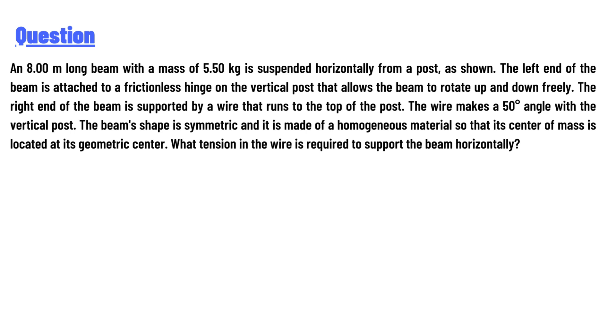The right end of the beam is supported by a wire that runs to the top of the post. The wire makes a 50 degree angle with the vertical post. The beam's shape is symmetric and it is made of a homogeneous material so that its center of mass is located at its geometric center. What tension in the wire is required to support the beam horizontally?